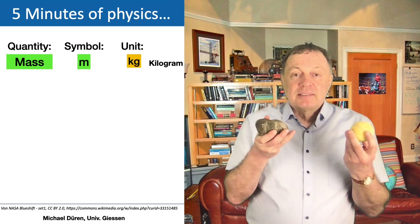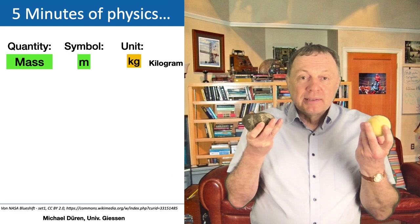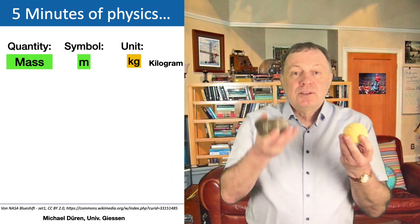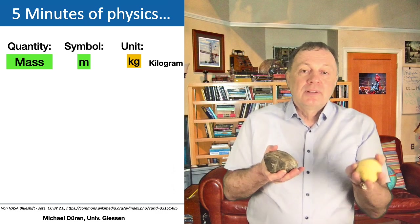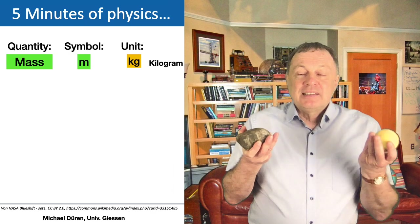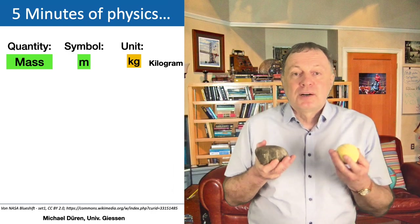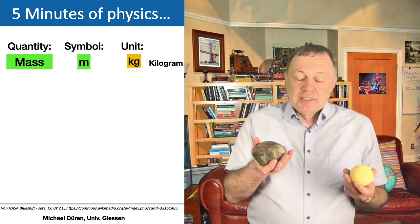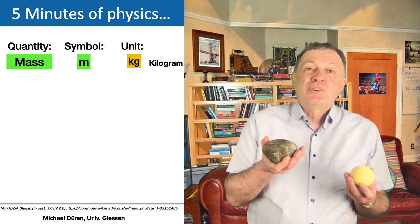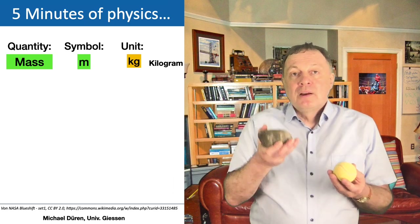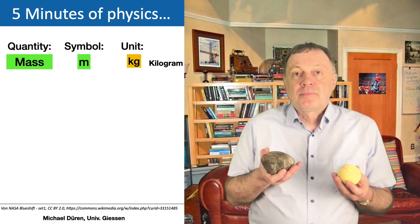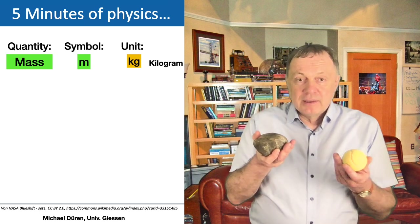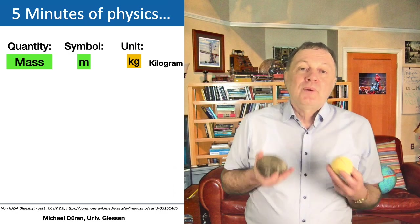Many people think about mass as being the weight. This stone has a high weight and the ball has a smaller weight, and that is for many people what mass is about. But this is not really the best way to think about it, because if you go to the moon, the stone has only a sixth of the weight - it's much lighter. And if you go to the space station in free space, both have no weight at all.